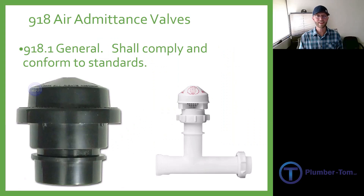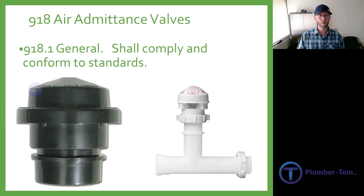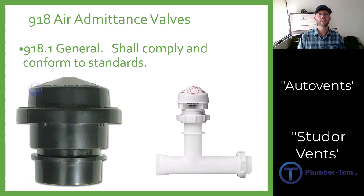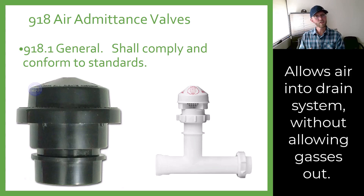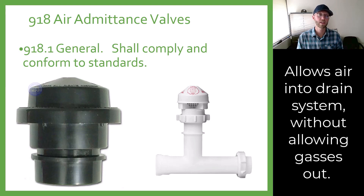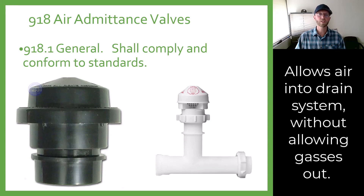Section 918 discusses air admittance valves, also known as auto vents, also known as studer vents. Studer was one of the early manufacturers of these types of venting devices, but altogether we're looking at a device that can allow air into the venting system without allowing sewer gas to come out. In 918.1, it says that these devices shall comply and conform to certain standards.